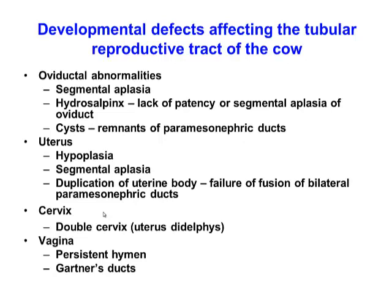Some developmental defects affect the reproductive tract of cows. There are segmental aplasias; hydrosalpinx, where you have dilation of the oviduct with fluid, arising from absence or constriction of part of the oviduct causing fluid to pool proximally; congenital cysts or remnants of the paramesonephric ducts causing cyst-like structures. In the uterus you can get hyperplasia, segmental aplasias, or duplication of parts. In the cervix you can get duplication of the cervix.